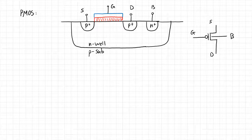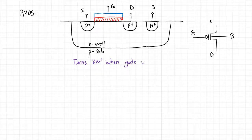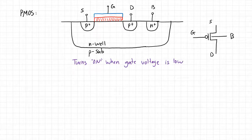Of course, we can't forget our body or bulk contact — it's always essential. Again, if it's not drawn it's there, but we have to be aware of what it's usually contacted to. The PMOS transistor, unlike the NMOS transistor, turns on when the gate voltage is low — it's effectively the opposite effect, which makes sense since this is the P-type device versus the N-type device.